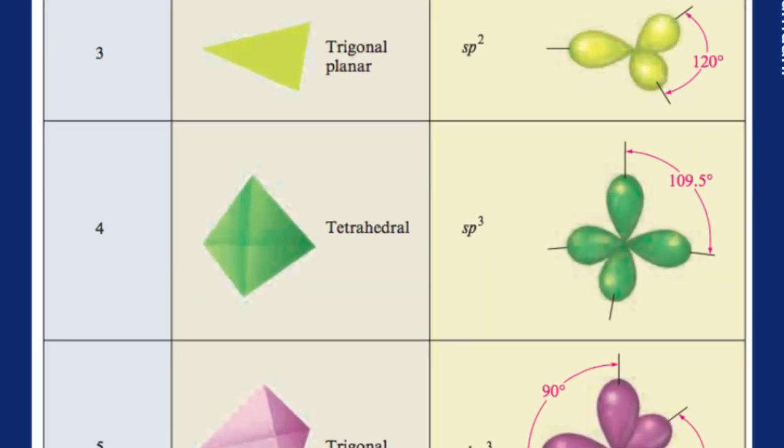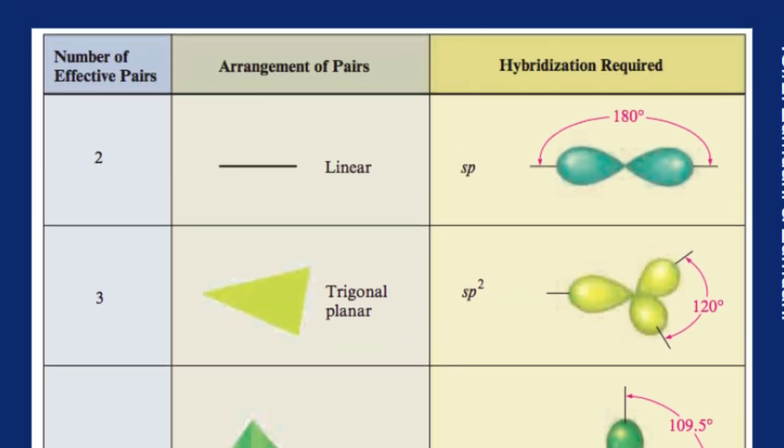So we started out with methane and saw how that one s orbital and the three p orbitals blended together to make your tetrahedral shape and the sp3 hybridization. And I talked about how you don't have to actually use all three p orbitals. You can blend one s orbital and two p orbitals to make an sp2 hybridization, and that results in a trigonal planar shape.